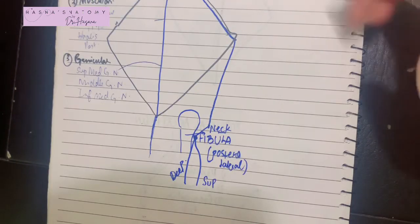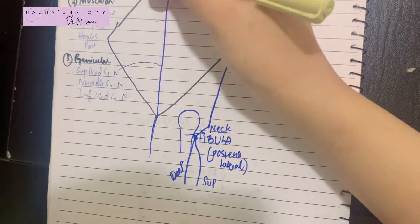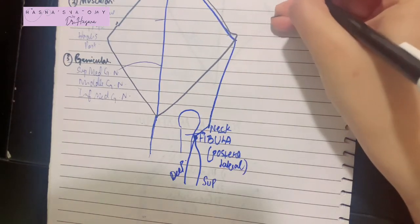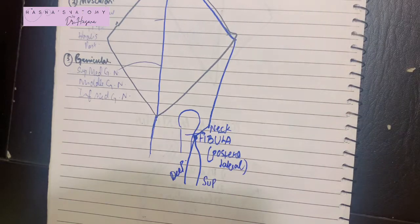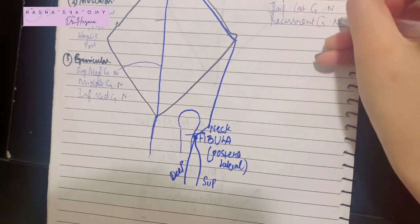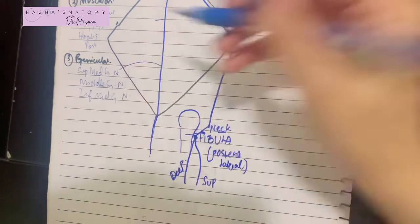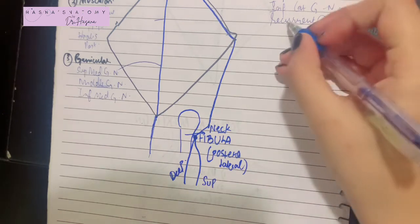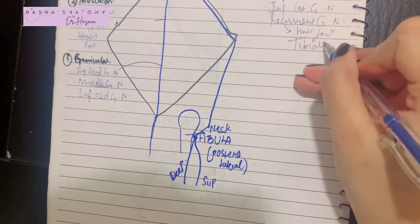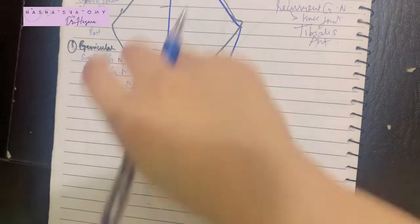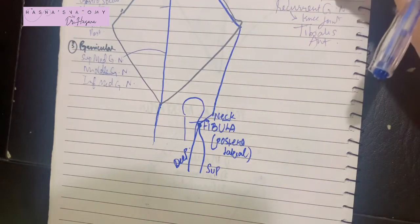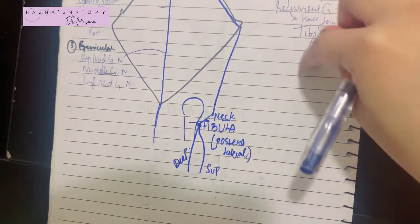The common peroneal nerve gives genicular branches corresponding to the tibial nerve's, but these are the superior lateral genicular and inferior lateral genicular nerves. It also gives a recurrent genicular nerve, which is responsible for supplying the knee joint and the tibialis anterior muscle. So the nerve to popliteus from the tibial nerve supplies tibialis posterior, while the recurrent genicular branch of the common peroneal nerve supplies tibialis anterior — an important distinction.